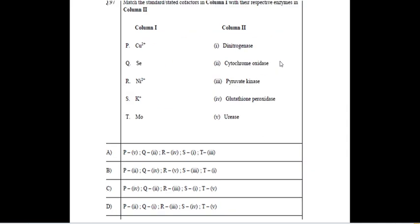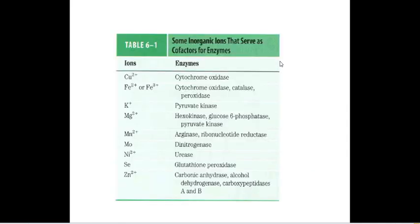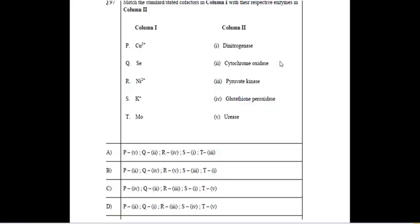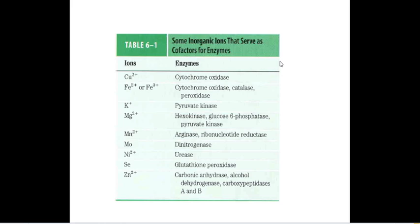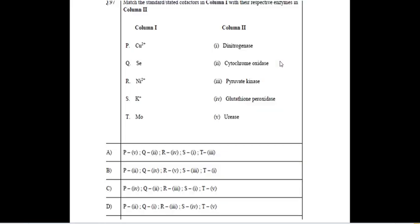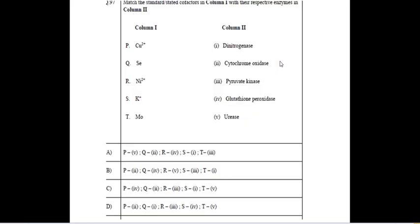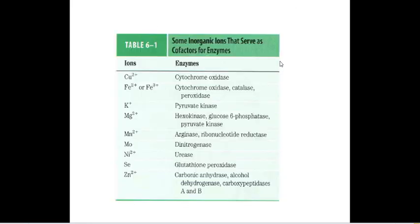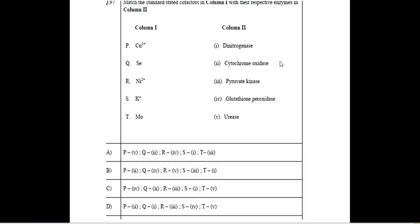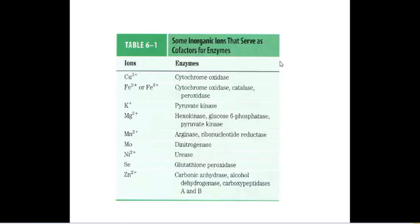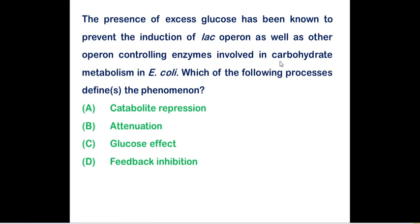Cofactor of the enzyme: Copper is a cofactor for cytochrome oxidase enzyme. Selenium is a cofactor for glutathione peroxidase enzyme. Nickel is a cofactor required for the urease enzyme. Potassium ions will be acting as a cofactor for pyruvate kinase. Molybdenum will be acting as a cofactor for dinitrogenase. Already we had discussed in our revision series. If you watch the revision series, it will be definitely very much helpful.